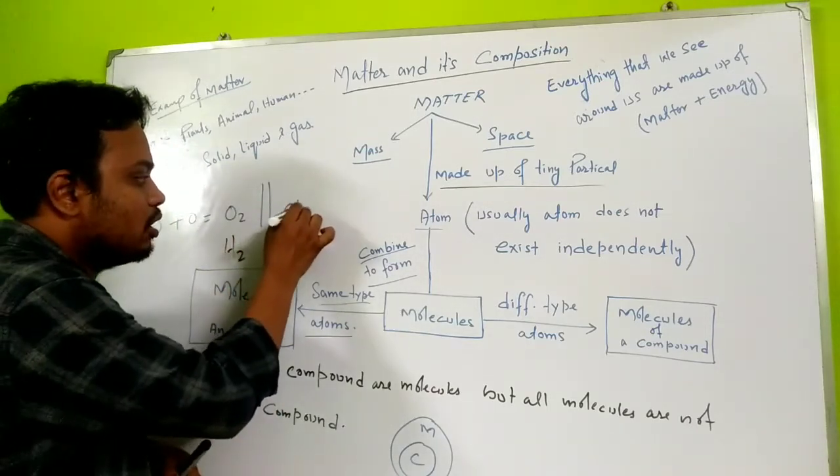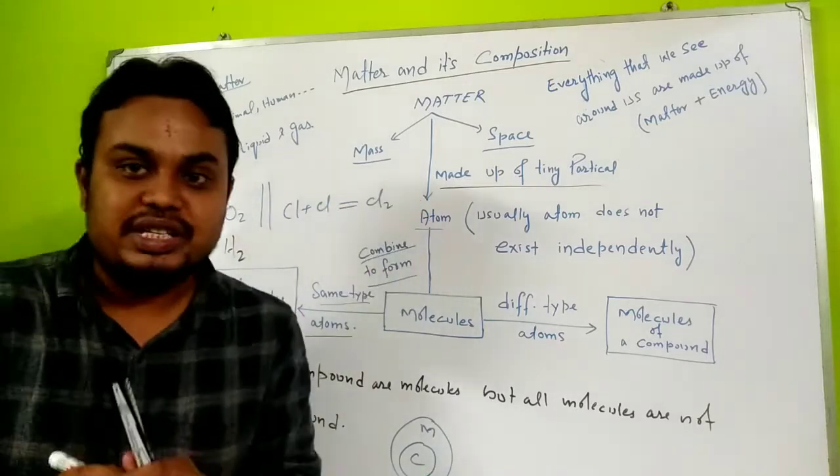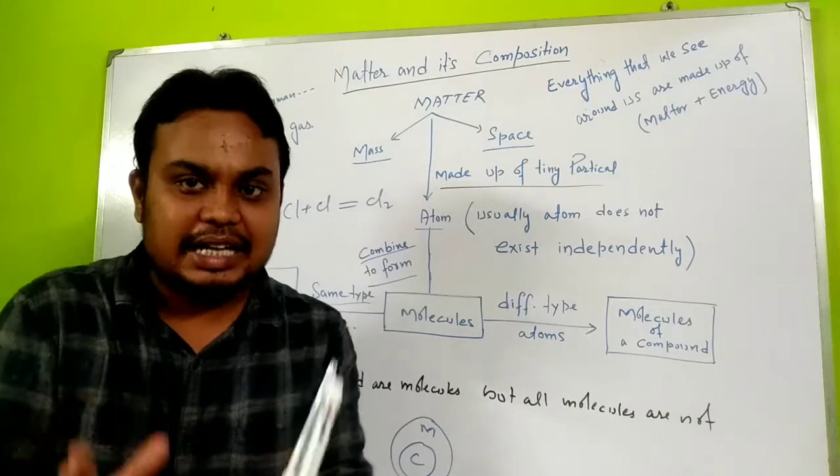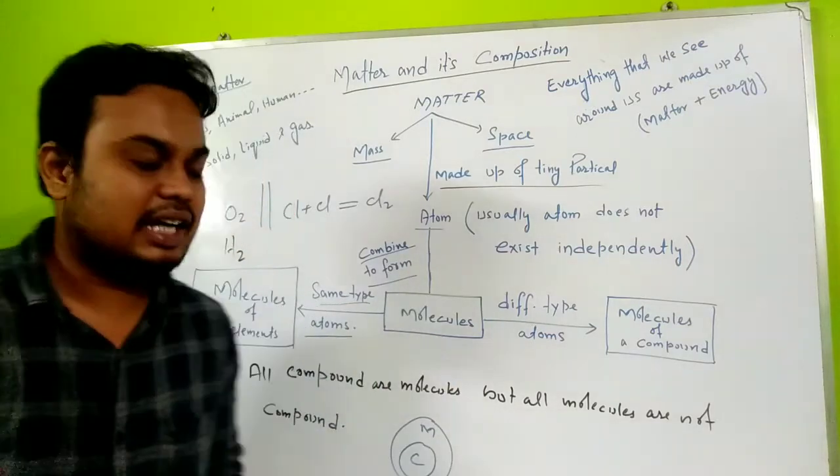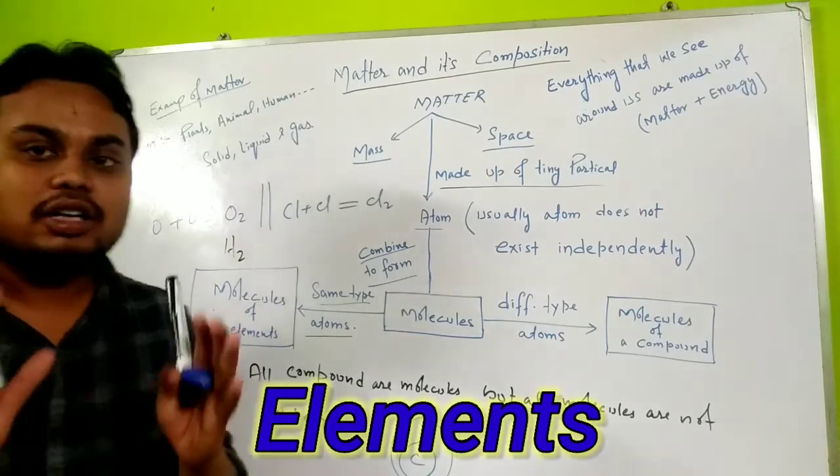Similarly, if you take chlorine gas, one chlorine combines with another chlorine to form chlorine gas. So when atoms combine with similar atoms, we call this molecules of an element.